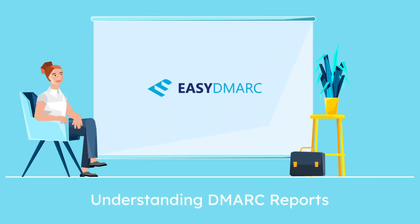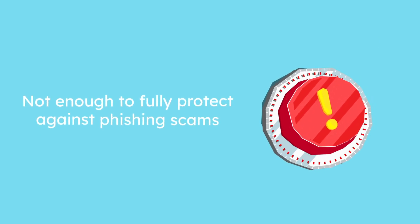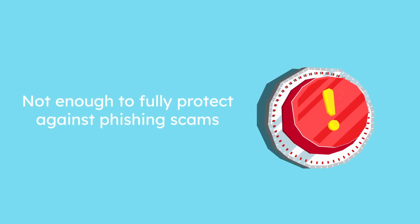Email authentication technologies, SPF and DKIM, were developed over a decade ago in order to provide advanced privacy on the identity of the sender of a message. Unfortunately, it soon became clear that these technologies were not enough to fully protect against phishing scams.